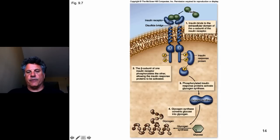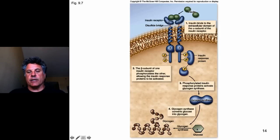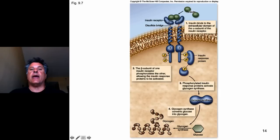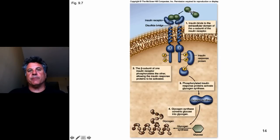Glycogen synthase becomes active and converts free glucose to glycogen, the storage form of glucose. So when you eat a big sugar meal, your insulin will respond and lower your blood glucose by causing target cells to take that glucose and lock it into polymerized glucose, which is glycogen. Glycogen synthase is only activated when you have phosphorylated insulin response proteins, and those are only phosphorylated when the receptor tyrosine kinase is activated by bound insulin. This illustrates a cascading effect that transduces an extracellular signal into an appropriate cellular response.